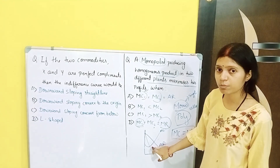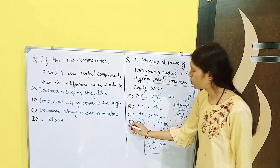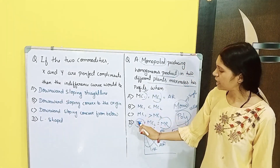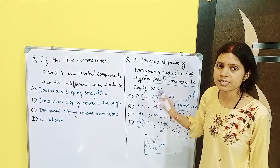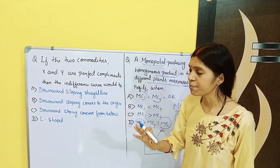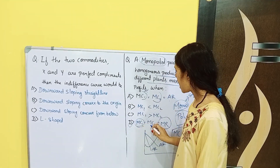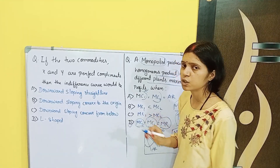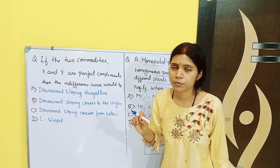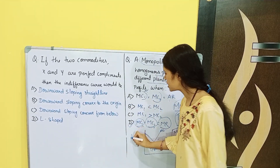The maximum profit and equilibrium situation is this. The answer is D: MC1 is equal to MC2 is equal to MR. Normally we have studied Marginal Cost and Marginal Revenue, but here there is MC2 as well. This is the concept you have studied in the monopoly market. The answer is D.